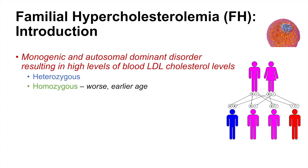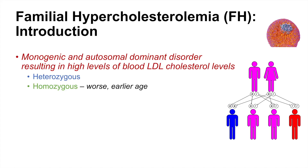If we look at a pedigree, if we have two heterozygous parents, there is a 25% chance that a child will be homozygous. This is something we call gene dosing — if you have one of the alleles, you have a certain severity; if you have two alleles, it increases the severity of the condition.